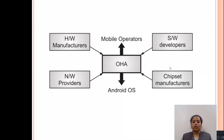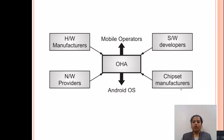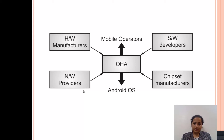The second component is the chipset manufacturers. Similarly, like hardware manufacturers, chipset manufacturers like Intel are also one of the components of OHA. The third component is the network providers, which are responsible for the running of the applications, and they are also a part of the Open Handset Alliance.